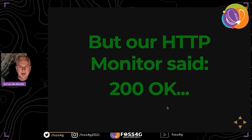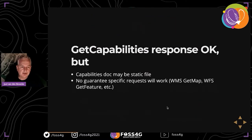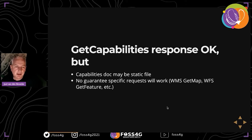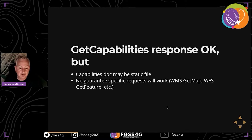In the IT department they use an HTTP uptime service, which in these cases would say everything is okay - it's a 200 HTTP response. The OWS services, at least the first generation, have their own error handling on top of HTTP. Or the monitor is only testing GetCapabilities and assumes that if that works, everything is okay - but capabilities documents could be a static file.